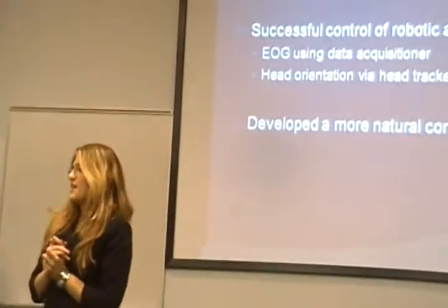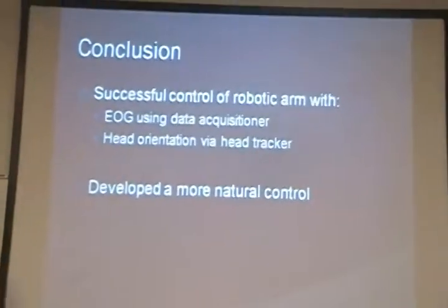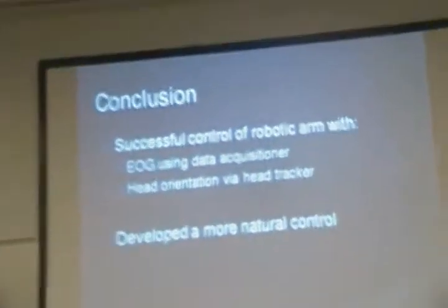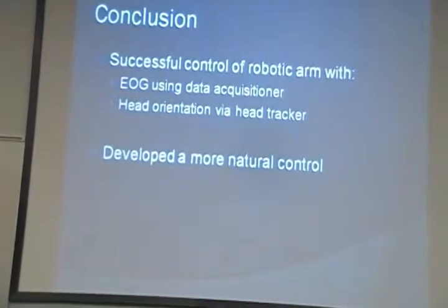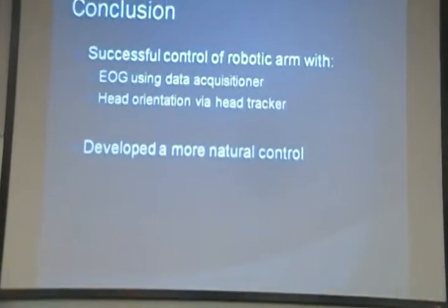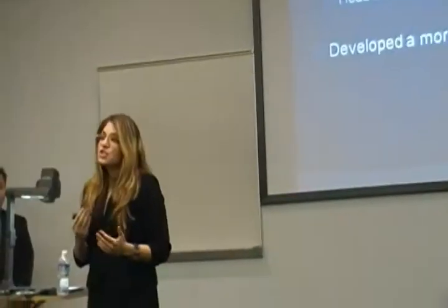Going back to the beginning, we discussed how many people are affected with amputation and proposed a solution using the combination of eye gaze and head movements to drive a prosthetic arm. We achieved around 72% accuracy, which means we met our criteria. After our literature search, this is probably the first time anyone has used EOG signals to drive a prosthetic arm.